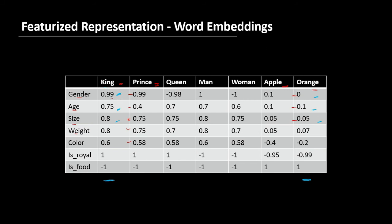Another thing you can see is that the gender value of 'king' and 'queen' is almost opposite, while the gender value of 'king' and 'man' is quite close to each other because both of them are male. Thus, the machine can understand that 'king' and 'prince' are related because they are both royal and both male. And similarly, 'king' is not a food while 'apple' and 'orange' are food, and thus their values are opposite to each other. This way, the machine can realize the context and the relationship between words.